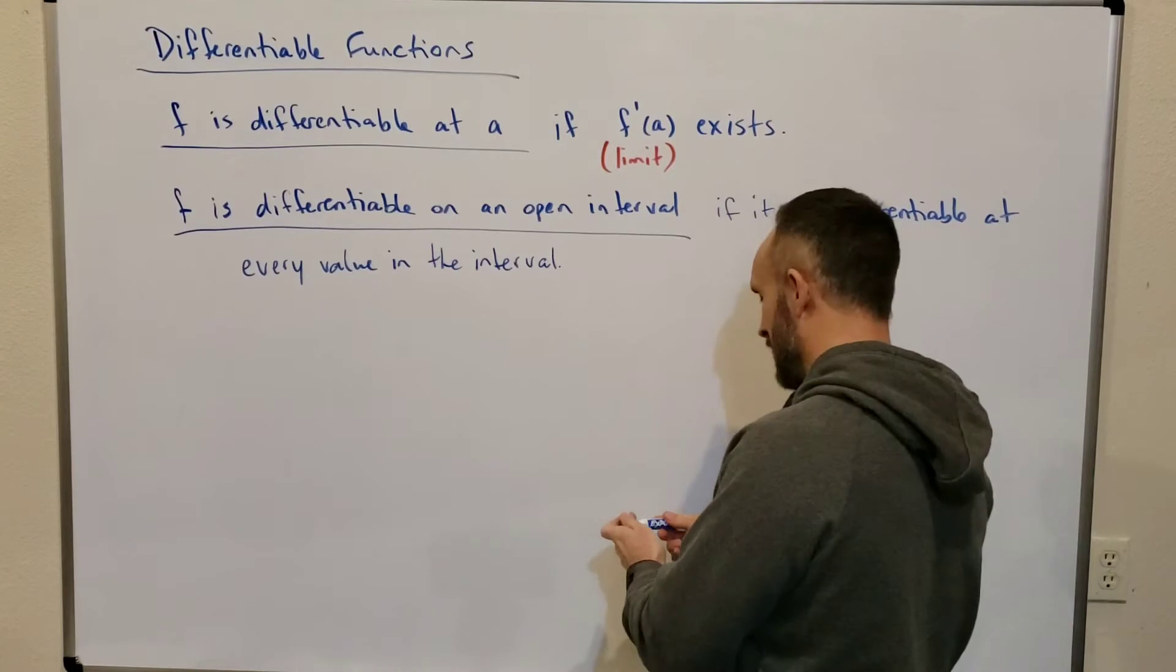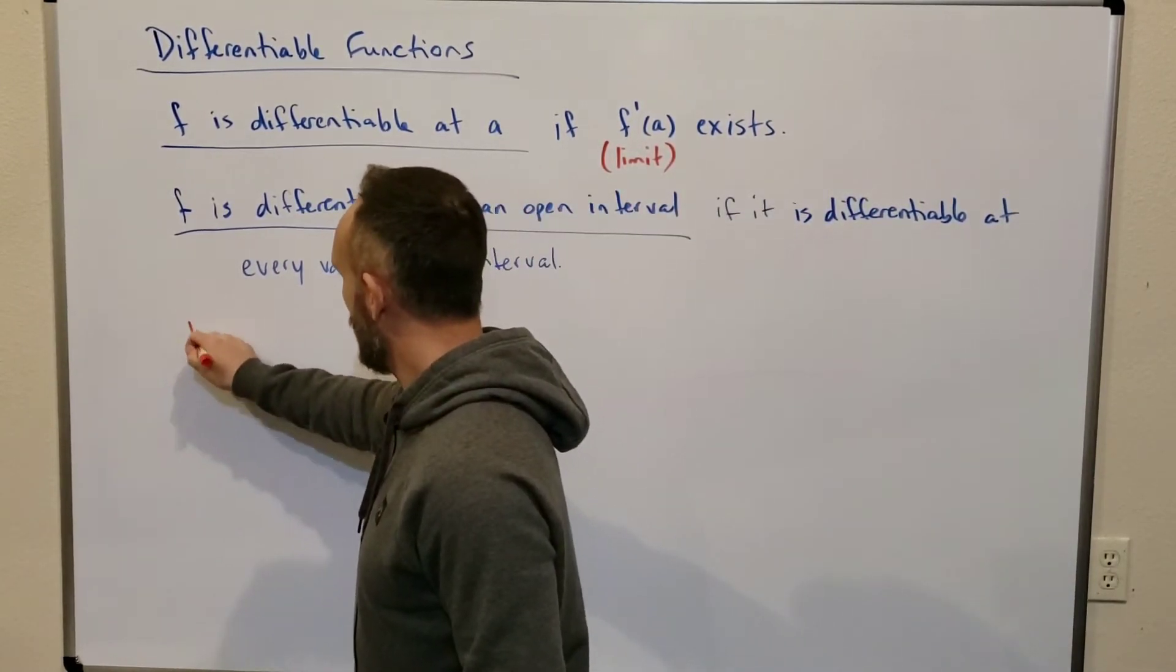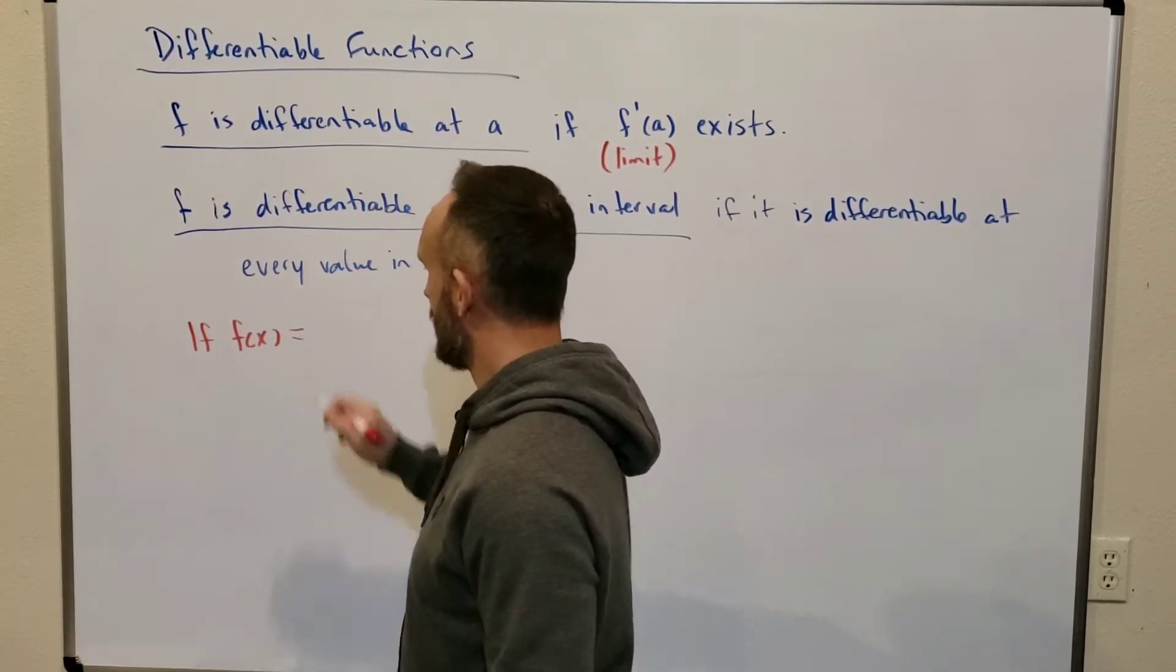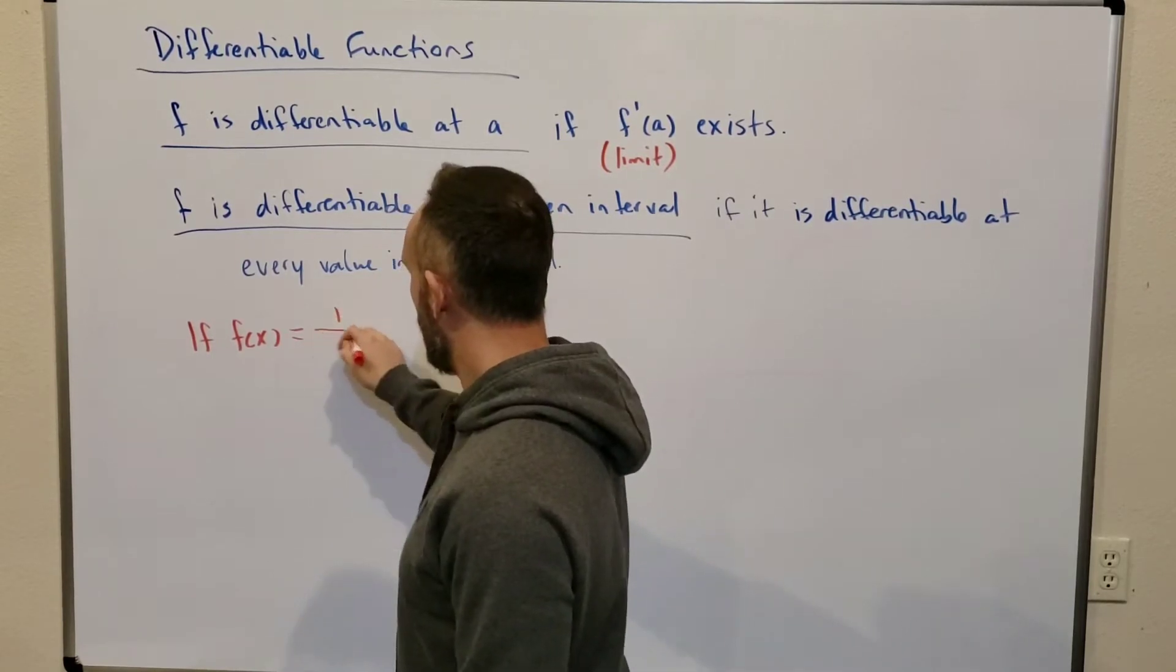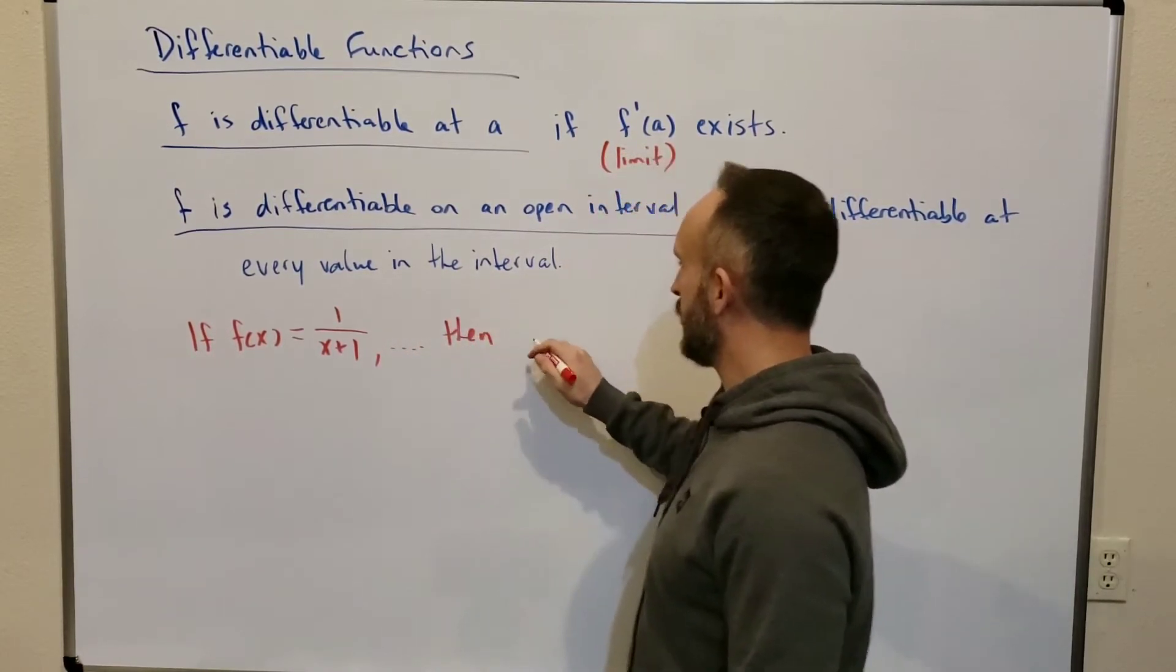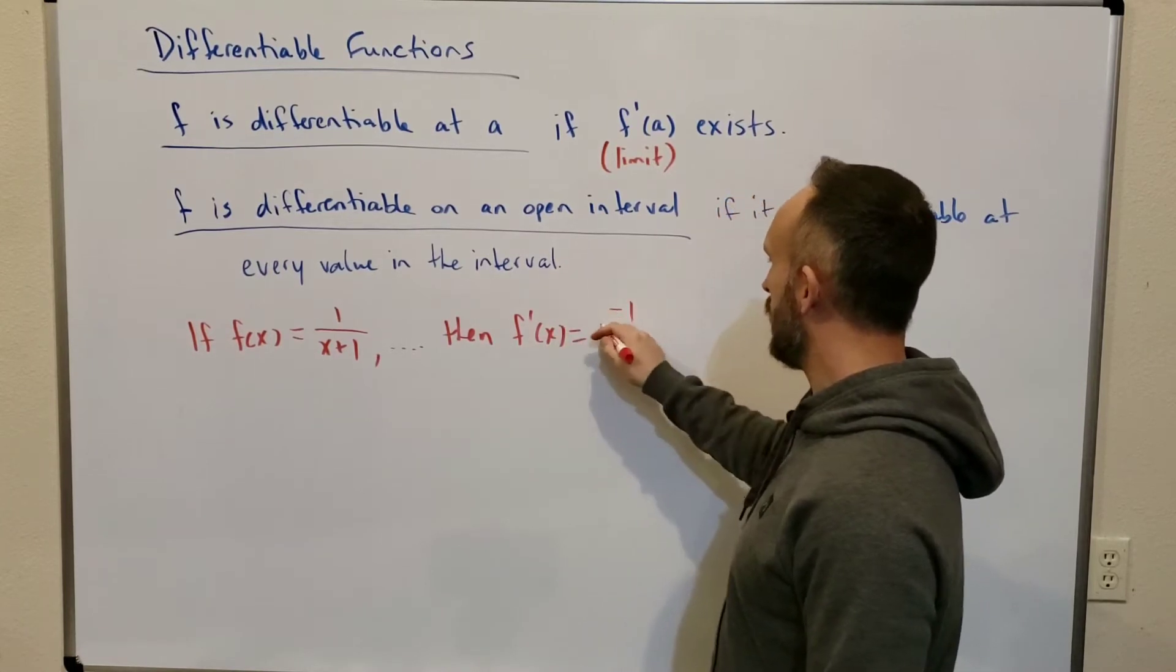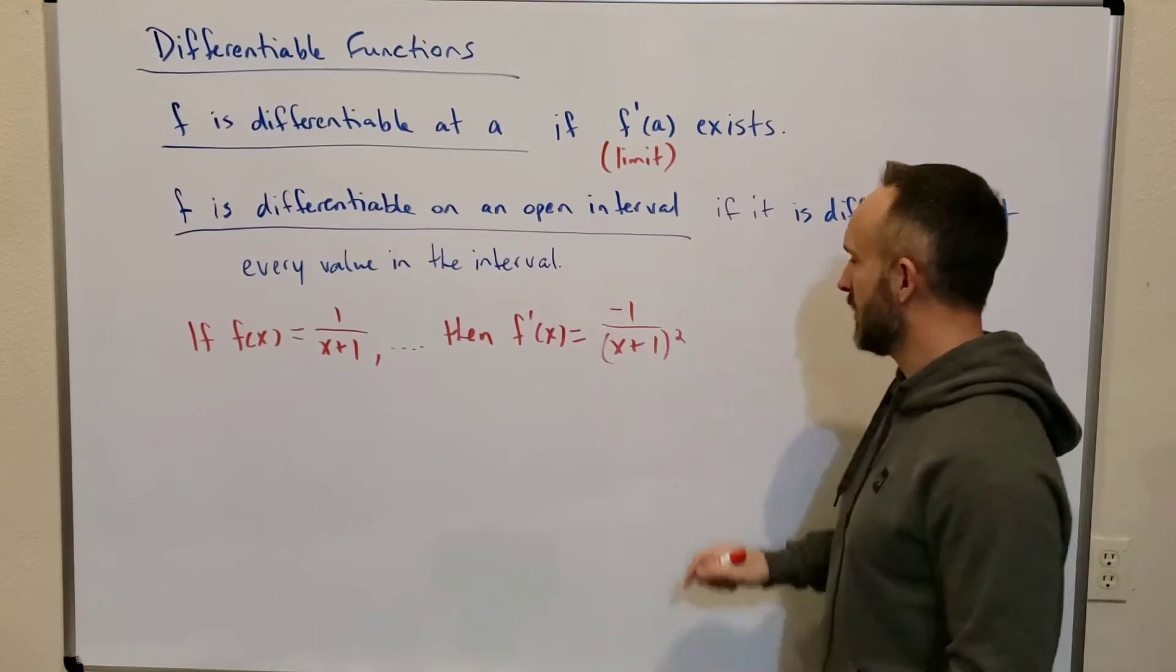Let's use a different color here. So I'm not going to show why this is true. In fact, I just did it in a previous video. But if f of x equals 1 over x plus 1, then through some work, you could see pretty quickly that f prime of x equals negative 1 over x plus 1 squared.